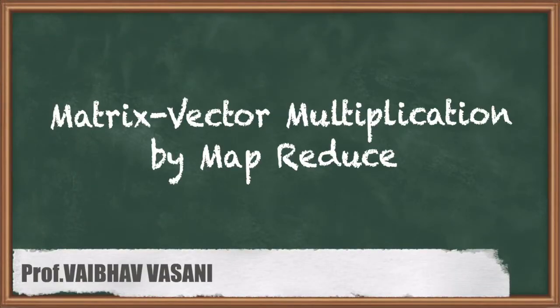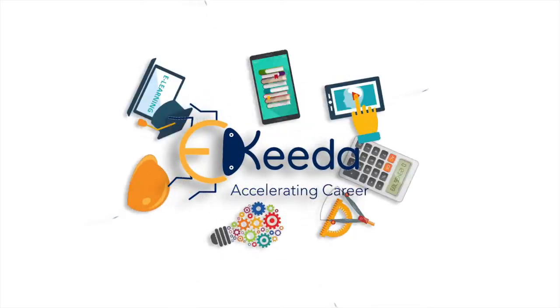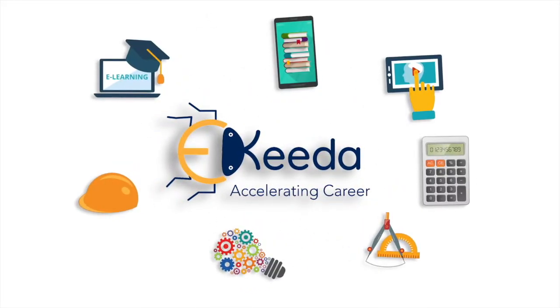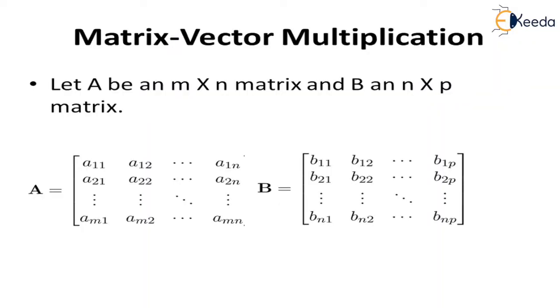Matrix Vector Multiplication by MapReduce. First of all, we understand matrix vector multiplications. We have matrix A and B with the dimensions M by N and N by P respectively.